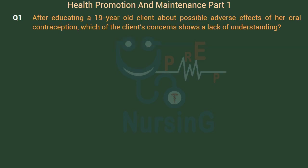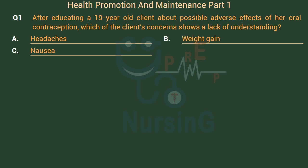After educating a 19-year-old client about possible adverse effects of her oral contraception, which of the client's concerns shows a lack of understanding? Option A: Headaches. Option B: Weight Gain. Option C: Nausea. Option D: Ovarian Cancer.